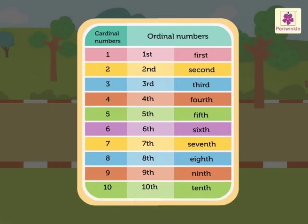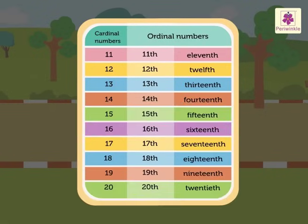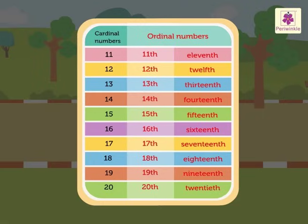The table shows the cardinal numbers 1 through 10 and the corresponding ordinal numbers 1st to 10th. Like this, all cardinal numbers have their corresponding ordinal numbers. Now let us look at the cardinal numbers 11 to 20 and their corresponding ordinal numbers 11th to 20th.